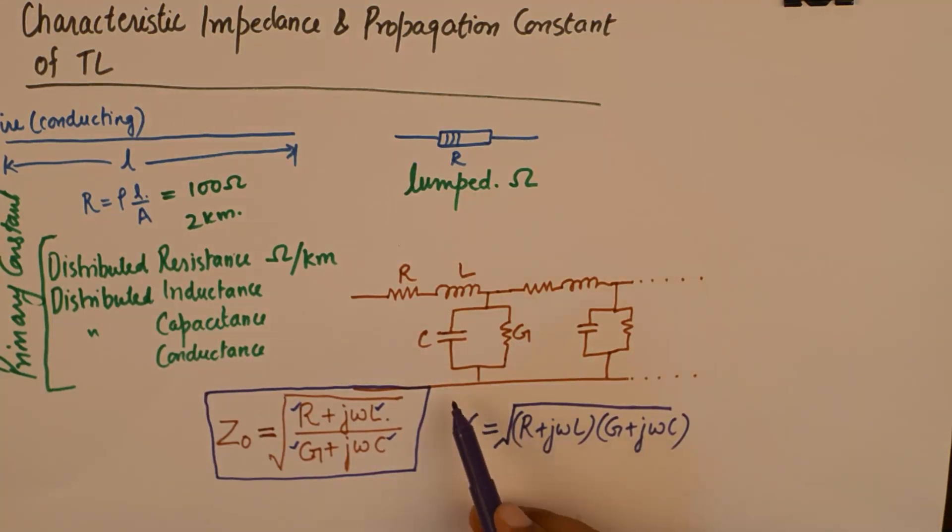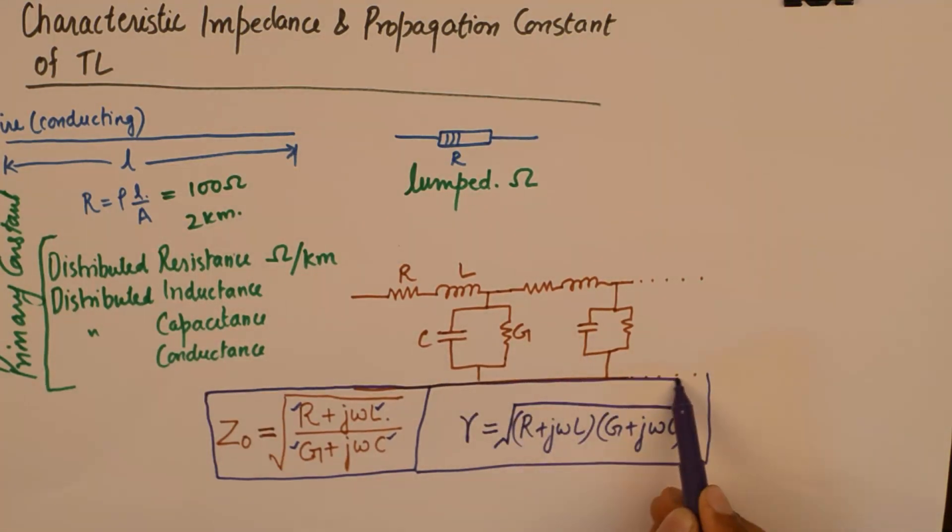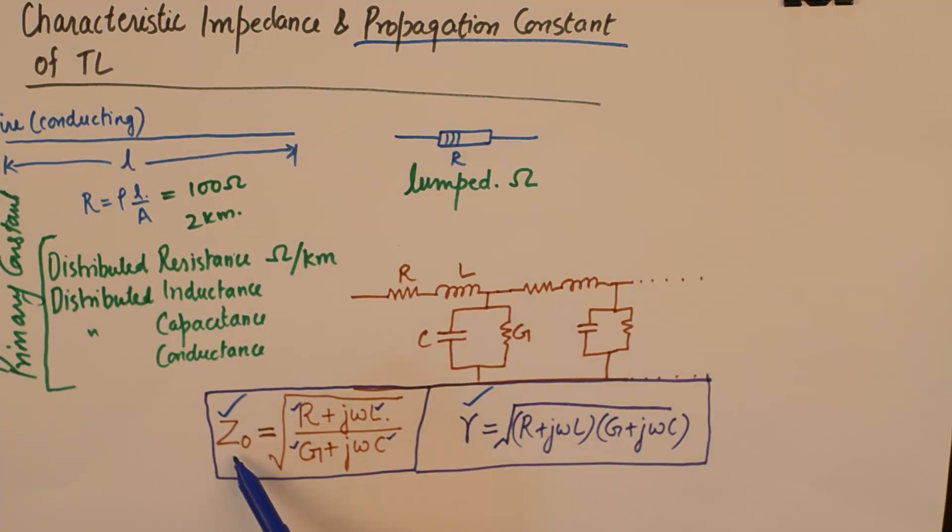And both these components together, they form the secondary constants of a transmission line, more precisely to say. Gamma is the propagation constant and Z0 is the characteristic impedance.